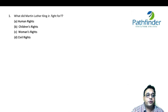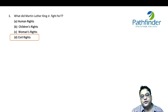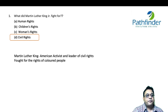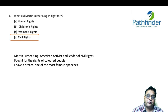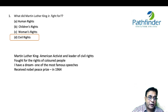What did Martin Luther King Jr. fight for? Of the four options — human rights, children's rights, women's rights, and civil rights — we know that he fought for civil rights, especially for people of color in America. Martin Luther King was an American activist and leader of civil rights. One of his most famous speeches is the 'I Have a Dream' speech. He received a Nobel Peace Prize in 1964, and at the time he was one of the youngest to have received it, around 34 or 35 years old.